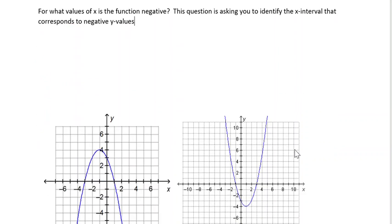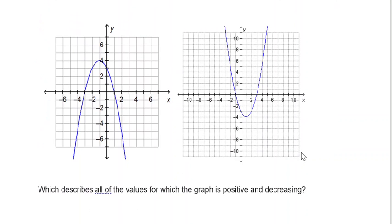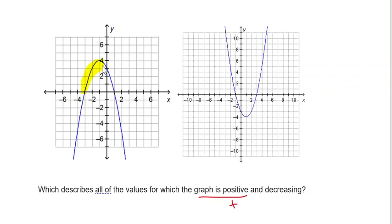Now that question is a little different than this next question, which asks which describes all of the values for which the graph is positive. Graph is positive — except here we're talking about the positive side above the x-axis. Where is the graph above the x-axis? That's the positive part above the x-axis.